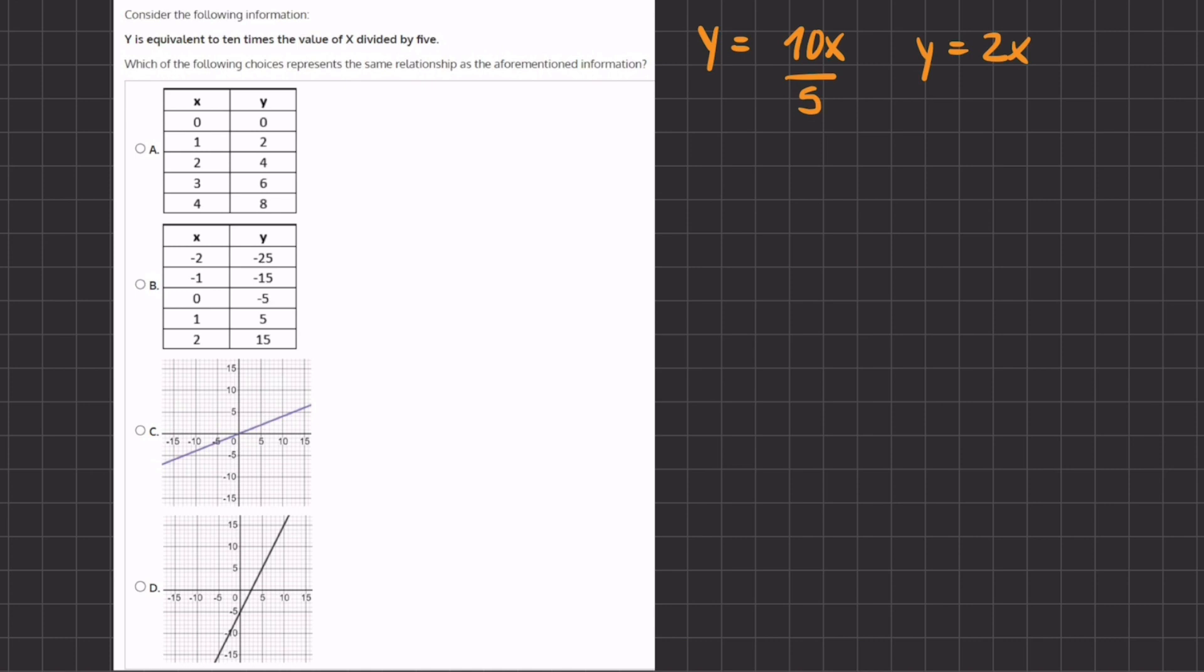Let's go to option A. We have 0 and 0, so if we plug in these values, we have 0 equals 2 times 0, which equals 0 equals 0, and this is correct. Now let's move on to our next one. We have 2 equals 2 times 1, which gives us 2 equals 2, which is also correct.